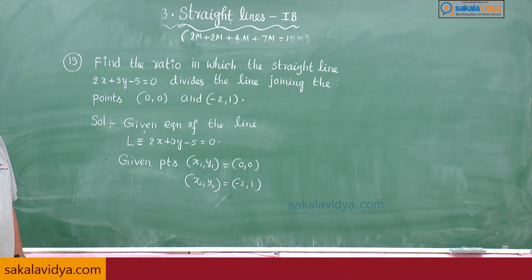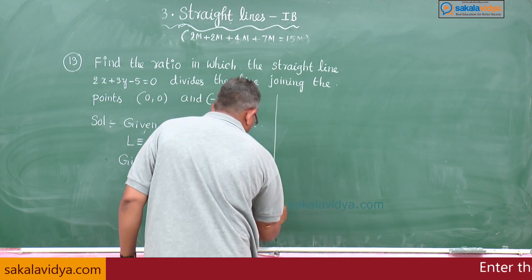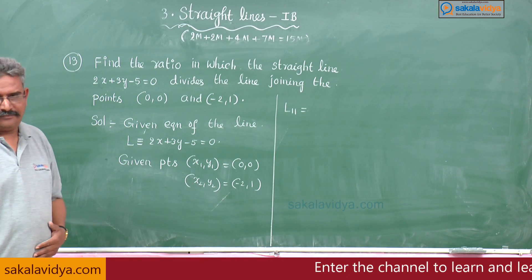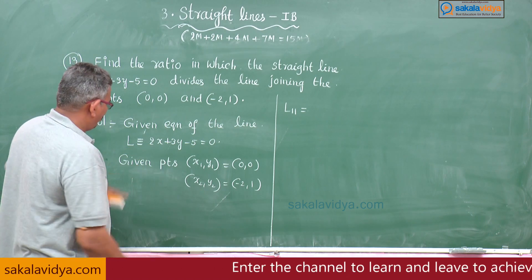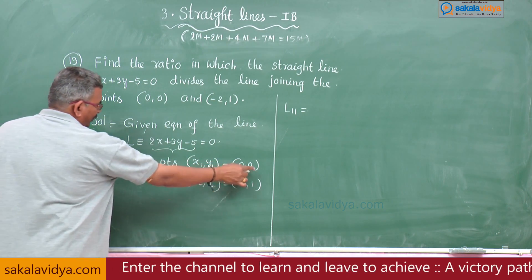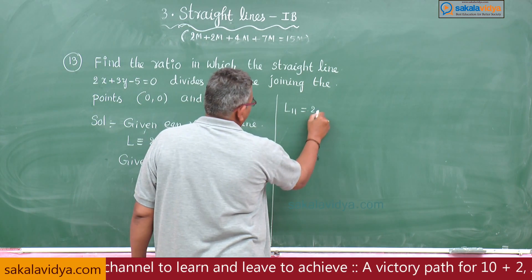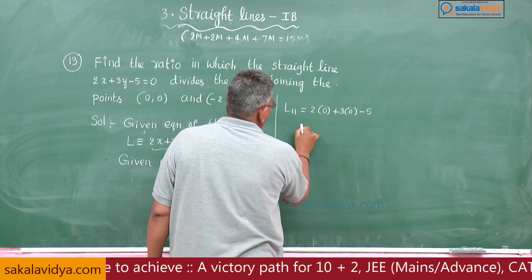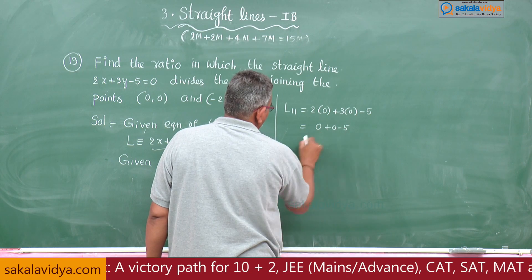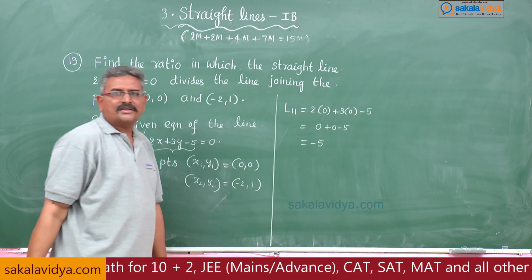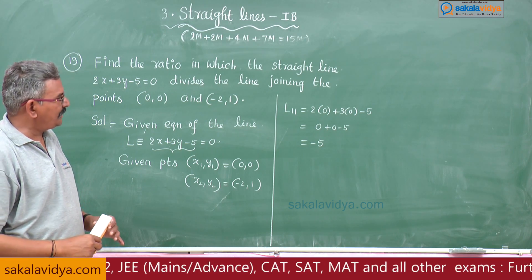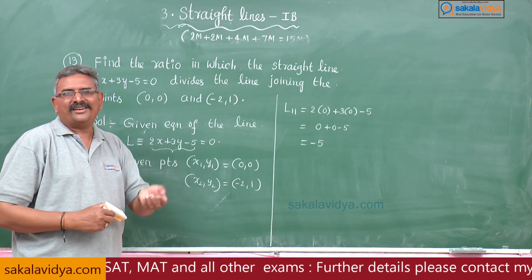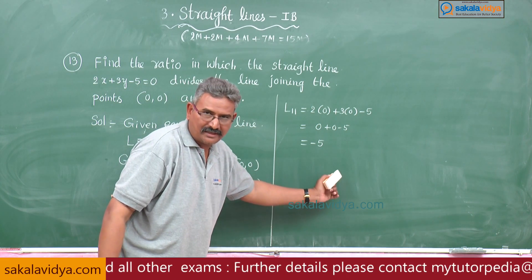The first step is to find L11. L11 means substitute the first point (x1, y1) equals (0, 0) into the expression. We get 2 into 0 plus 3 into 0 minus 5, which equals 0 plus 0 minus 5, which equals minus 5. We should be careful with calculations to avoid numerical errors.